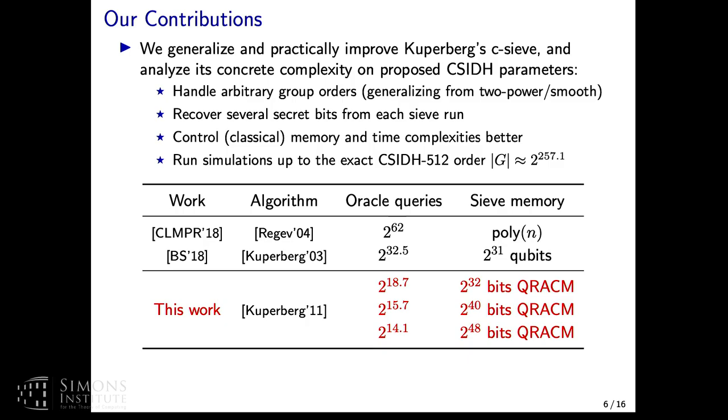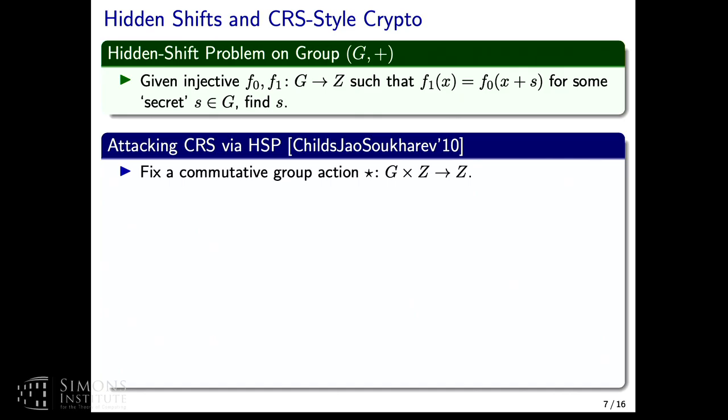What I mean by generalize and improve: we managed to handle arbitrary group orders using tricks that had applied to the first algorithm. We'll show a way to recover several secret bits from each run of the sieve, some tricks to control the time complexities and the memory complexities. And we actually run some simulations up to and including the exact group order of CSIDH-512. The simulations basically comport extremely closely to the theoretical model that we give. Using this much QRACM, increasing amounts of QRACM knocks down the number of oracle queries correspondingly.